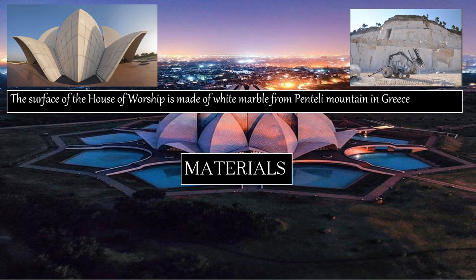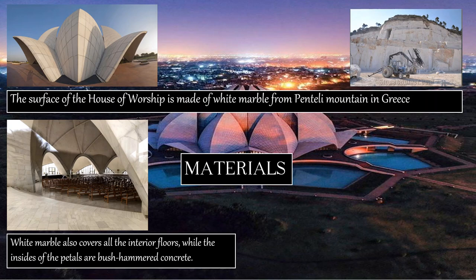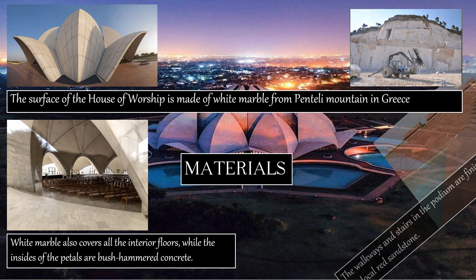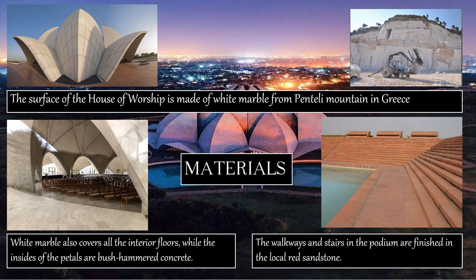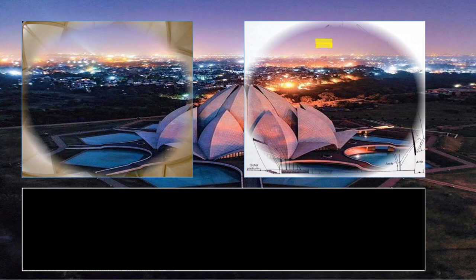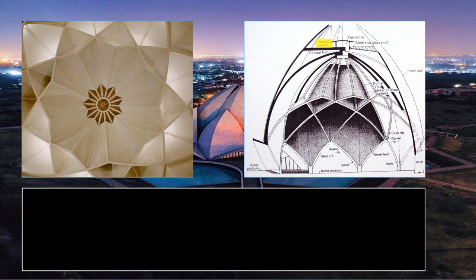Now for materials — the surface of the house of worship is made of white marble brought from the Penteli mountain in Greece. Not just the surface, but white marble also covers the interior floors, while the insides of the petals are bush-hammered concrete instead of marble. The walkways and stairs in the podium are finished in local red sandstone. You can see how white marble and white concrete are used effectively in the same structure.